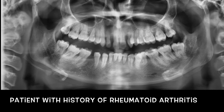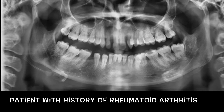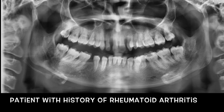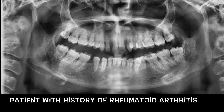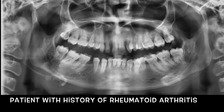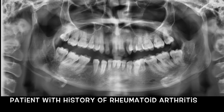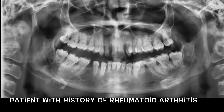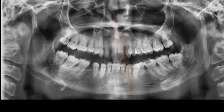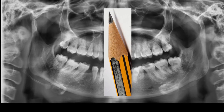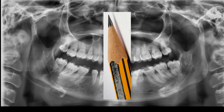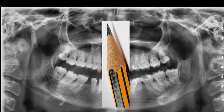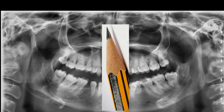This is a symptomatic temporomandibular joint dysfunction patient with a history of rheumatoid arthritis. The radiographic features were consistent with the clinical findings and history — severe erosive changes and alteration in the shape of the condyle are seen. Within a few years, the shape of the condyle may resemble a sharpened pencil, which is a characteristic feature of rheumatoid arthritis.